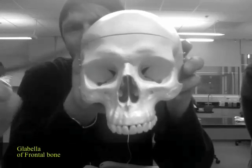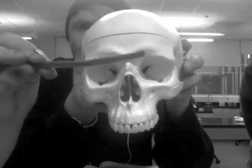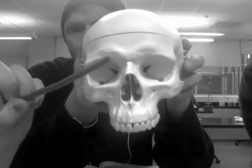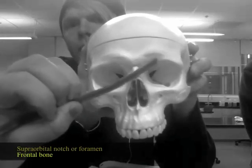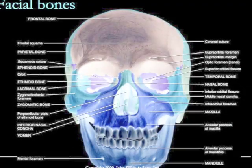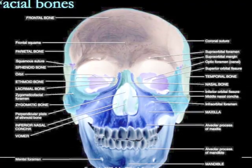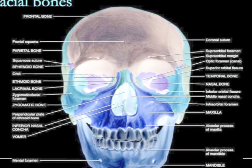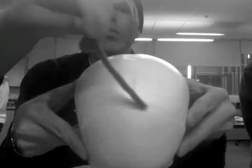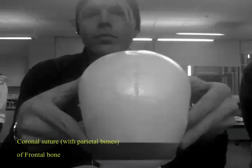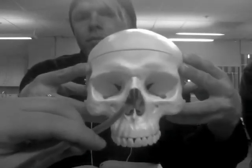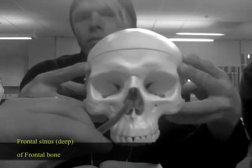Glabella of frontal bone. Superciliary arch of frontal bone. Supraorbital notch or foramen of frontal bone. Coronal suture between parietal and frontal bones. Frontal sinus of frontal bone.